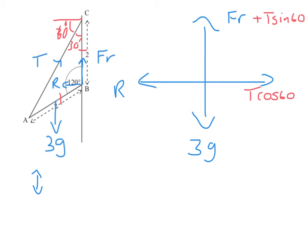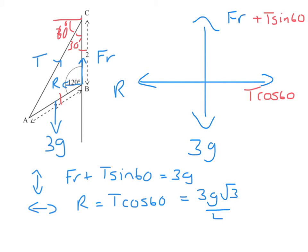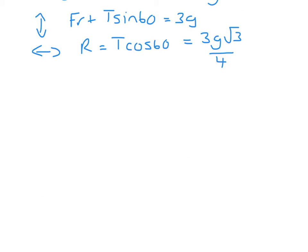If I consider my vertical, I have that friction plus T sine 60 has to equal 3g. If I consider my horizontal, then R equals T cos 60. But we just showed that R was 3g root 3 over 4, so that tells me that the tension is 3g root 3 over 2. And I know that friction equals mu R, so friction would be 3g minus T sine 60.